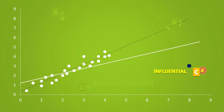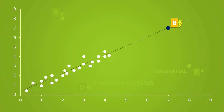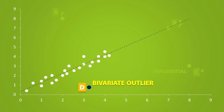Outliers like point C are called influential because they drastically change the position of the regression line. Remember that outliers in the X direction greatly influence the position of the regression line. Now let's look at point B. Point B is an outlier in both the X and Y direction. Although this point is an outlier, it falls within the original regression line, so it will have little effect on the position of the new regression line. If we look at the bivariate outlier, we see that it has a similar result, but only because it is not an outlier in the X or Y direction.